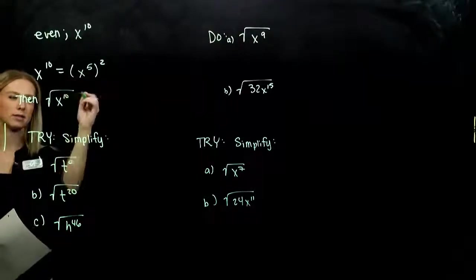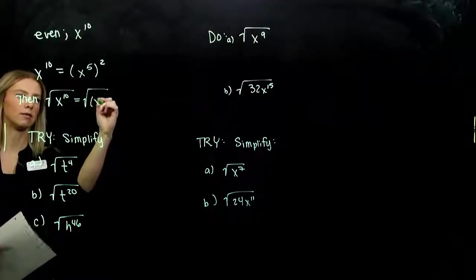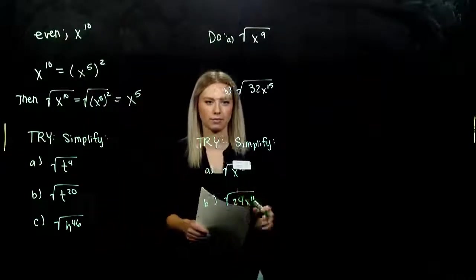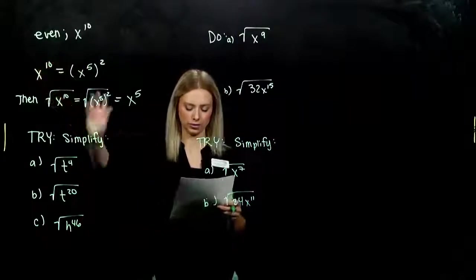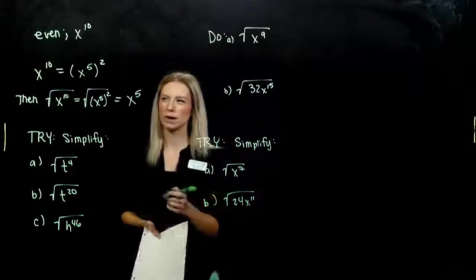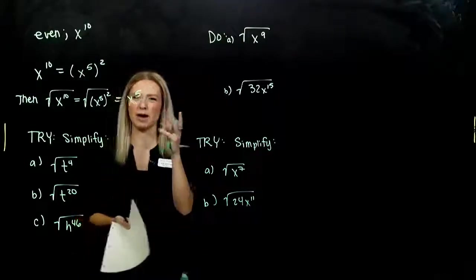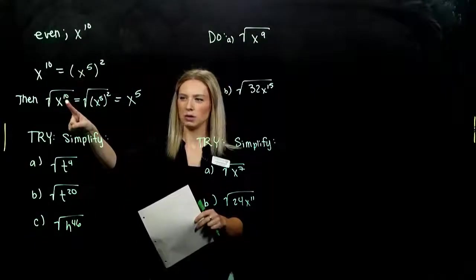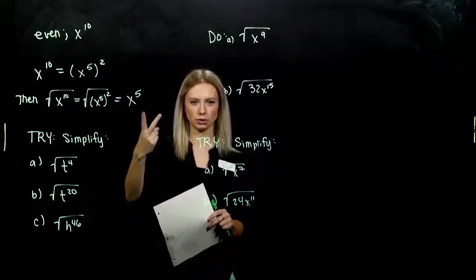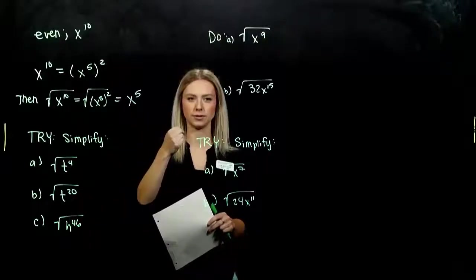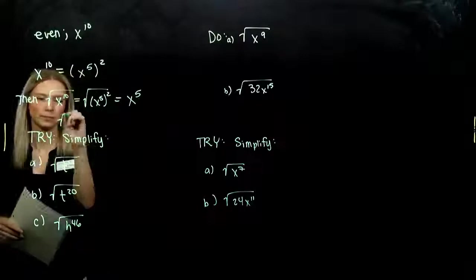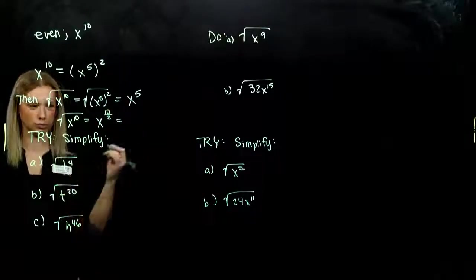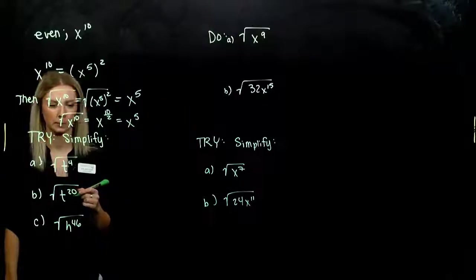The square root of x to the tenth is really the square root of x to the fifth squared, which evaluates out as x to the fifth. Because if I take that value and square it, I get x to the tenth. How can we simplify when taking the square root? We take the power — 10 — and divide it by 2, since we're dealing with a square root. So whenever we have an even power, we're just looking at x raised to the tenth divided by 2, which gives x to the fifth. This is actually what's happening, not just a shortcut.